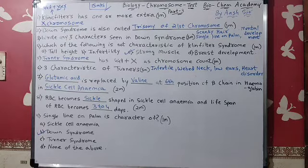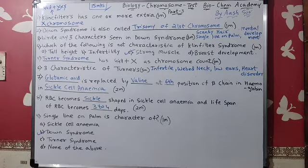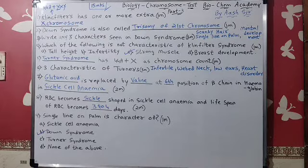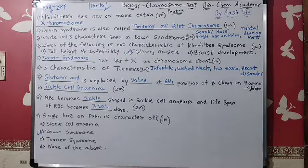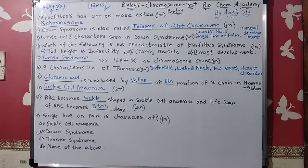Number five: Turner syndrome has 44 plus X as the chromosome count. Normally a female has XX, but in Turner syndrome one X is deleted, leading to 44A plus X. Three characteristics of Turner syndrome: infertility, webbed neck, low-set ears, and heart disorder, among many others. You can check the details in the video.